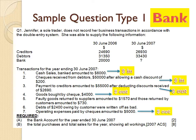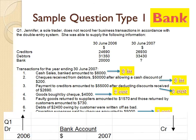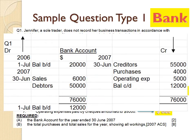So to prepare the bank account: start with the opening balance of $20,000, then add all money coming in, then subtract all money going out, and this gives you the balance carried down to bring forward to next year.